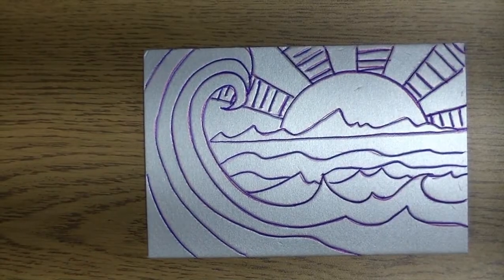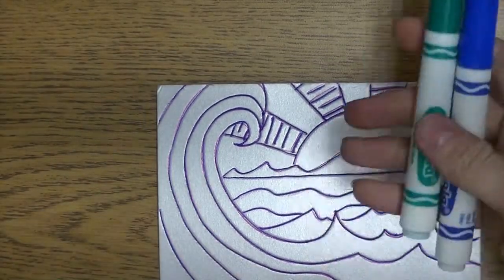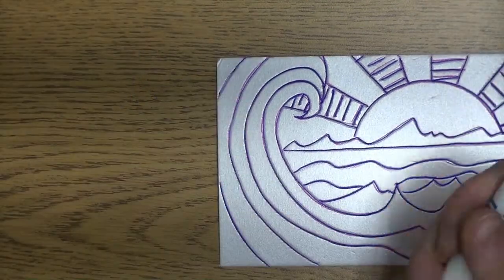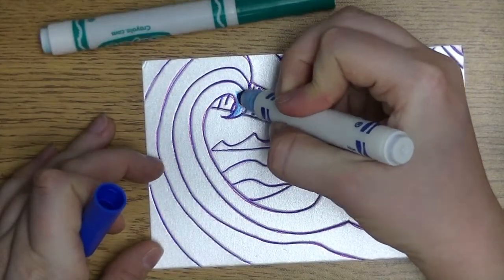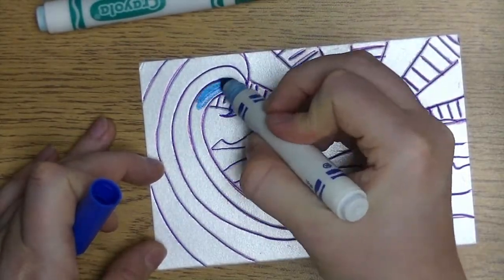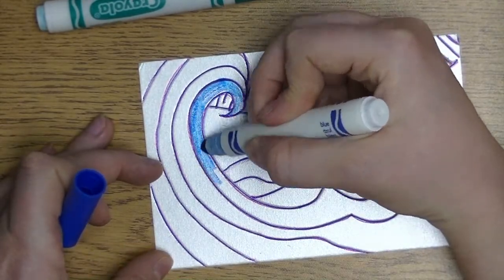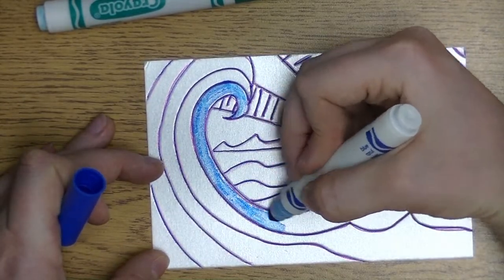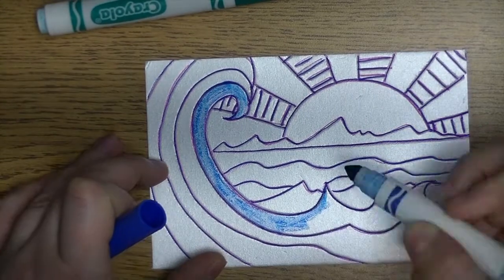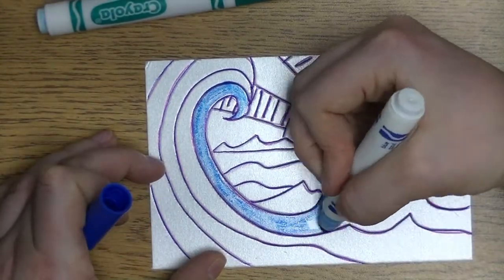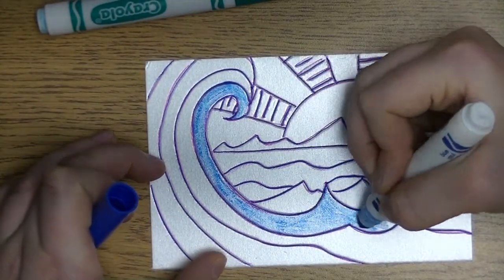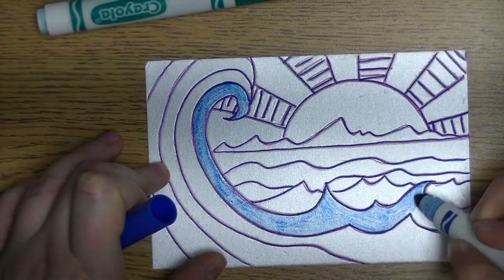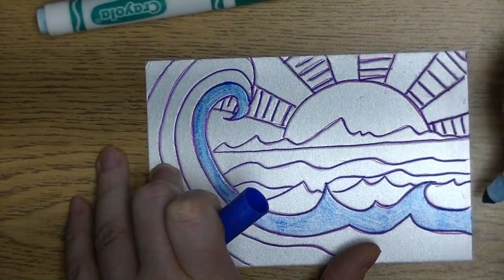After all of your tracing is done, you're going to use Crayola markers because they are water soluble. You do not want to use permanent markers for this step. You're going to go in and color the whole printing plate, going around all of your lines.